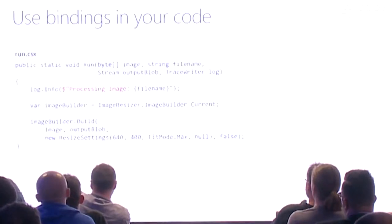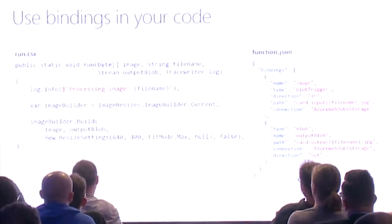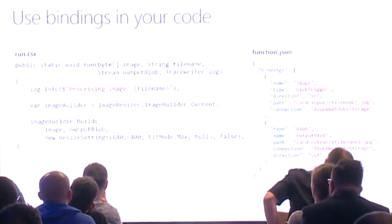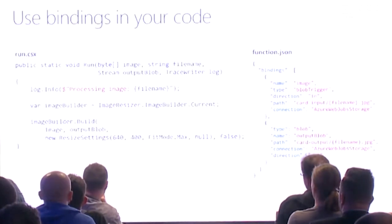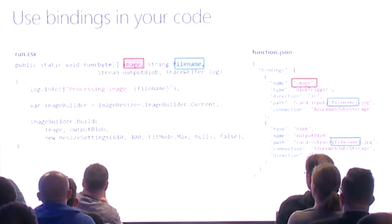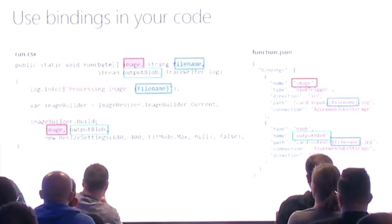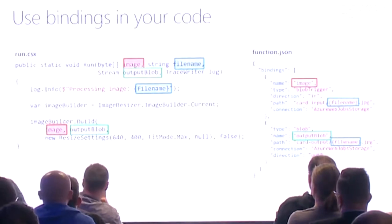Here's the same thing in C#. Note this is a .csx file — a C# script file, not a full class. With the new tooling you can now use full C# classes. Same pattern: bindings for the image, output destination, then the code — in this case we're building and resizing an image and outputting it back to blob storage. Simple as can be.